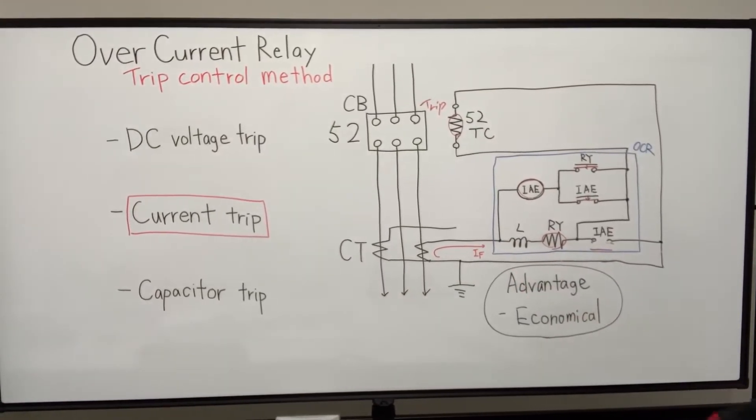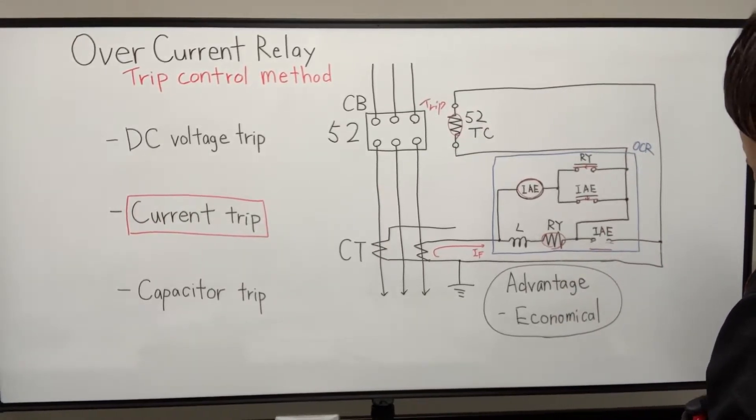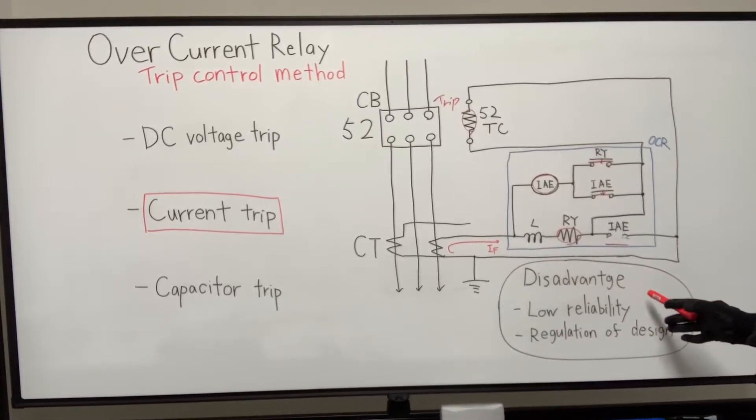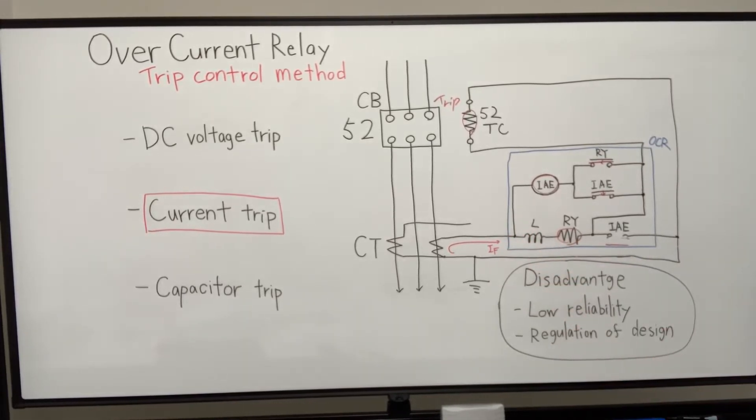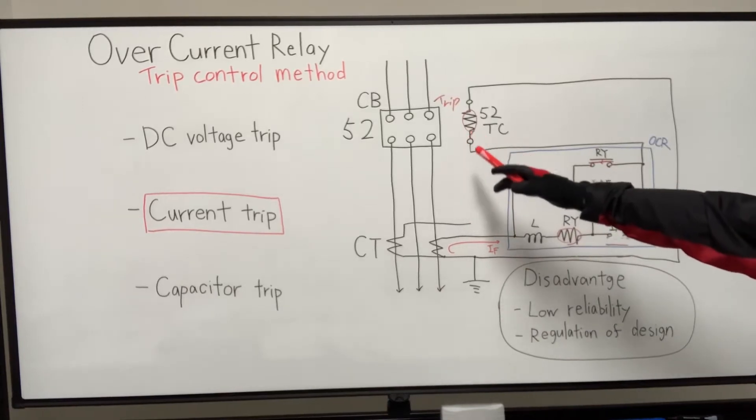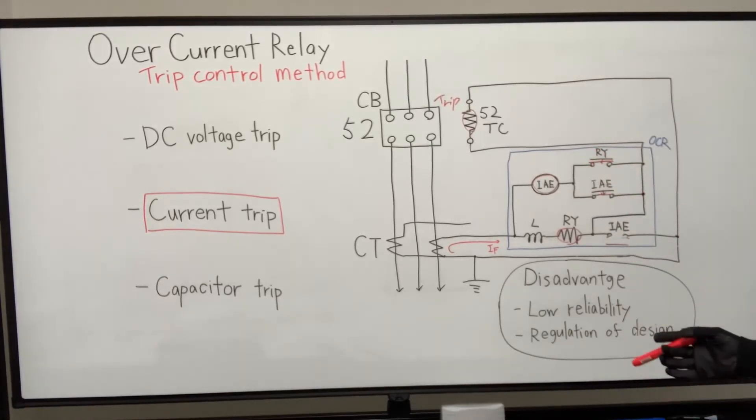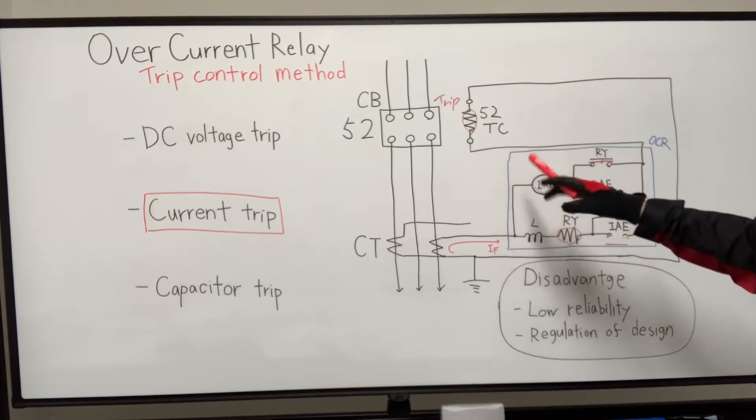And advantage of this current trip method is, it's relatively economical. It's cheaper because there are no need for installing some external device. On the other hand, disadvantage of this method is low reliability, because of using the fault current directly. And also, if the power voltage happens at the main power system, the control circuit no longer has a capability of tripping the circuit breaker. They lose the ability to trip the circuit breaker.